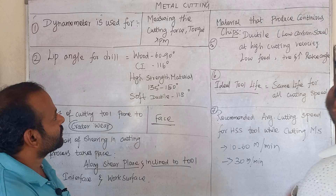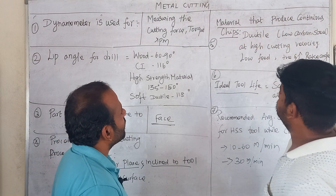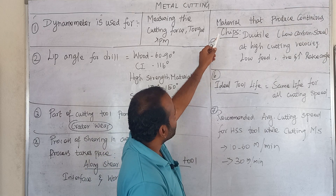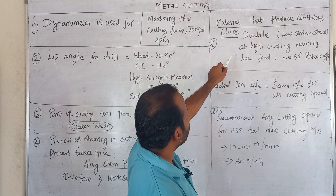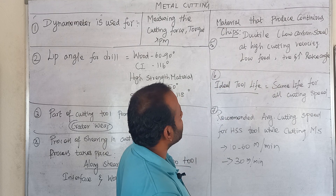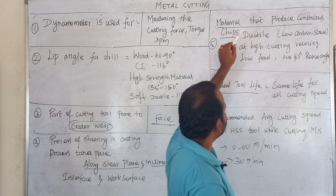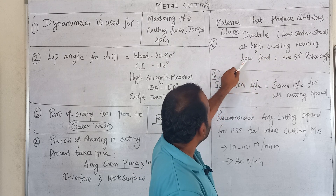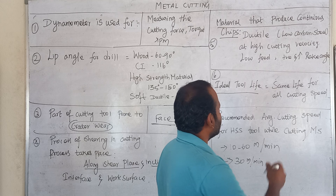The material that produces continuous chips involves ductile material with very low carbon percentage, high cutting velocity, low feed, and high rake angle. These are the conditions under which continuous chips are formed.